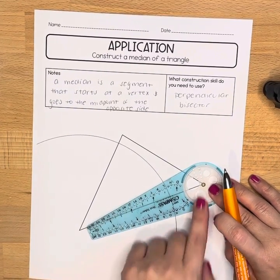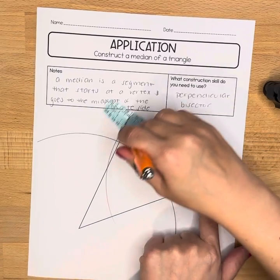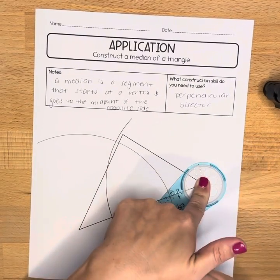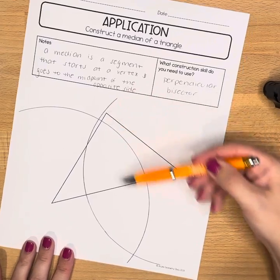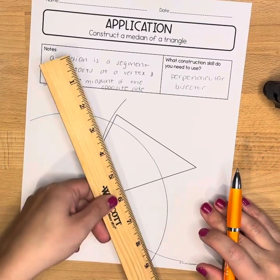Then I'm going to reverse this and I'm going to use that same measurement. And the goal is for our two arcs to intersect.